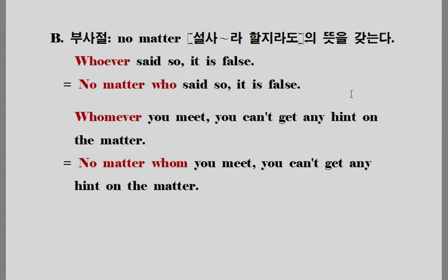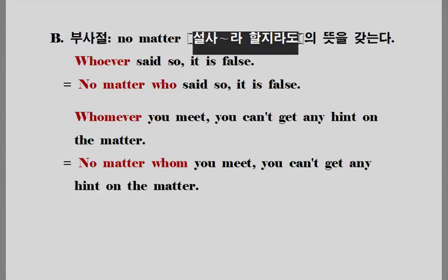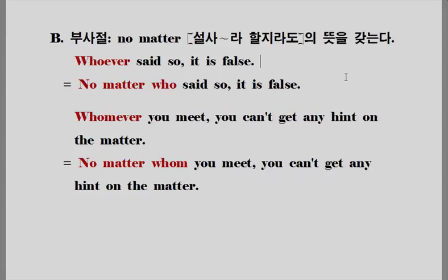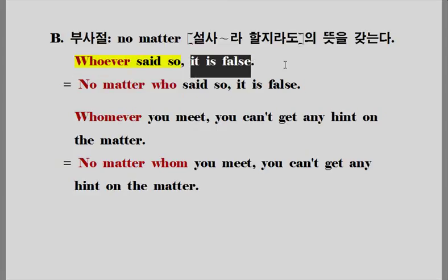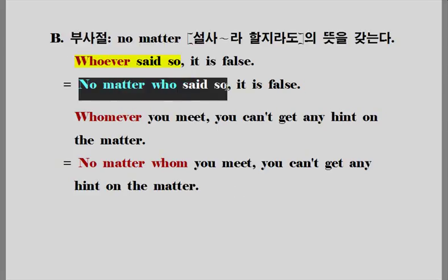다음에는 'no matter'의 개념을 갖는 경우를 살펴보겠습니다. 이때는 '설사 뭐뭐라 하더라도', 즉 양보의 개념으로 해석해주시면 됩니다. 예: 'Whoever said so, it is false.' 누가 그렇게 말한다 하더라도 그것은 거짓이다. 'whoever'는 'no matter who'가 되는 거죠. 하나의 덩어리로 보세요. 이 덩어리가 주절 내에서 아무런 역할도 하지 않으므로 부사절이 됩니다.